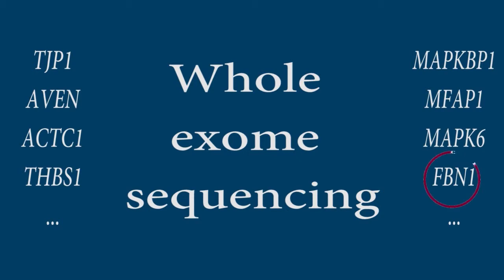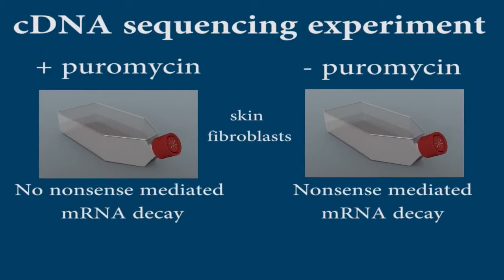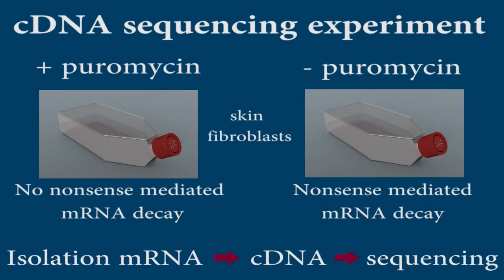Because FBN1 was also located in the linked region, we decided to screen FBN1 again, but this time at mRNA level. For that purpose, we isolated mRNA from patient skin fibroblasts, which were cultured in the presence or absence of puromycin. This is an inhibitor of nonsense-mediated mRNA decay. The mRNA was transcribed to cDNA and Sanger sequencing was performed.